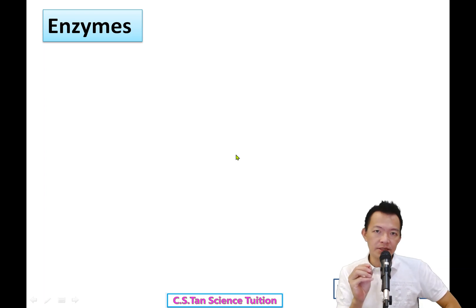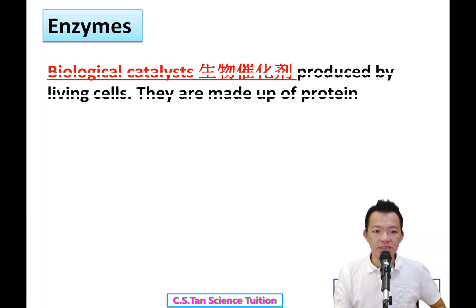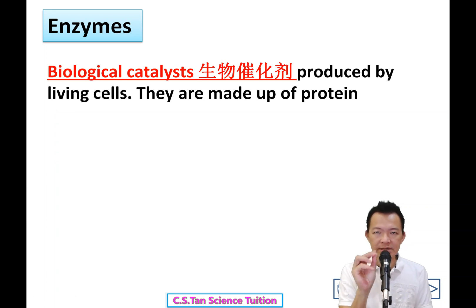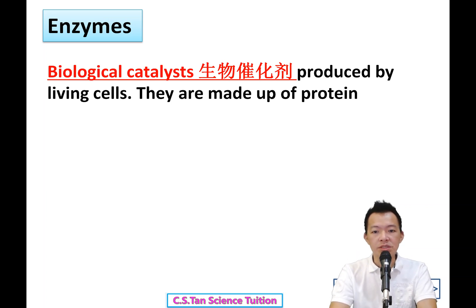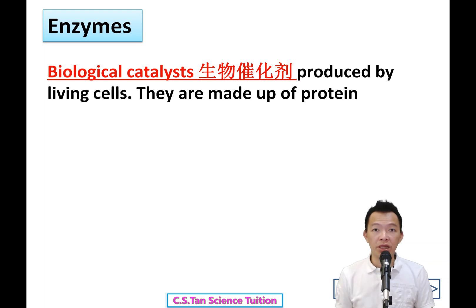What is meant by Enzymes? In Chinese, they are called 酵素 (jiào sù). Enzymes are actually a biological catalyst - 生物的催化剂 - produced by the living cell, made by your own cells. And all enzymes are made up of protein. You eat protein, protein is digested into amino acids, and the amino acids are used by your cells to produce the enzymes.